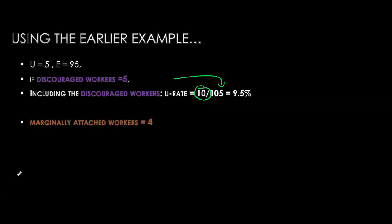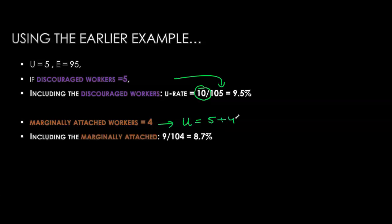Similarly, if we assume 4 million marginally attached workers and include them as unemployed — without including discouraged workers — the number of unemployed goes from 5 million to 9 million, and the unemployment rate increases from 5% to 8.7%.